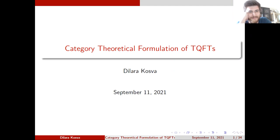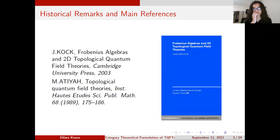Thank you, Ilker Oca. As you can understand, I will be talking about categorical formulation of topological quantum field theories. Let me first talk about my main references. Me and my mentor, Ilker Oca, covered this book by Jay Kock, on Frobenius algebras and 2D topological quantum field theories. This presentation will basically be a summary of some of his chapters. Since I don't have much time, I will be omitting all of the proofs and won't go into much detail. If anyone's interested, you can read this book.